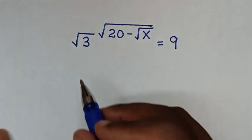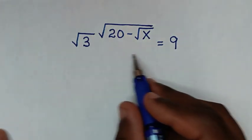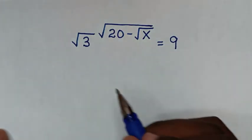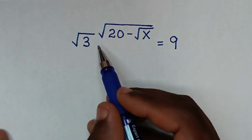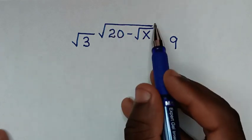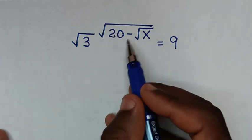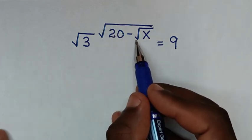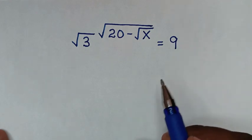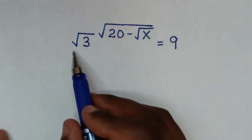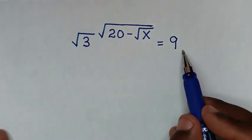Welcome. In this problem we need to solve: the square root of 3, raised to the power of (√20 minus √x), equals 9. We need to find the value of x.